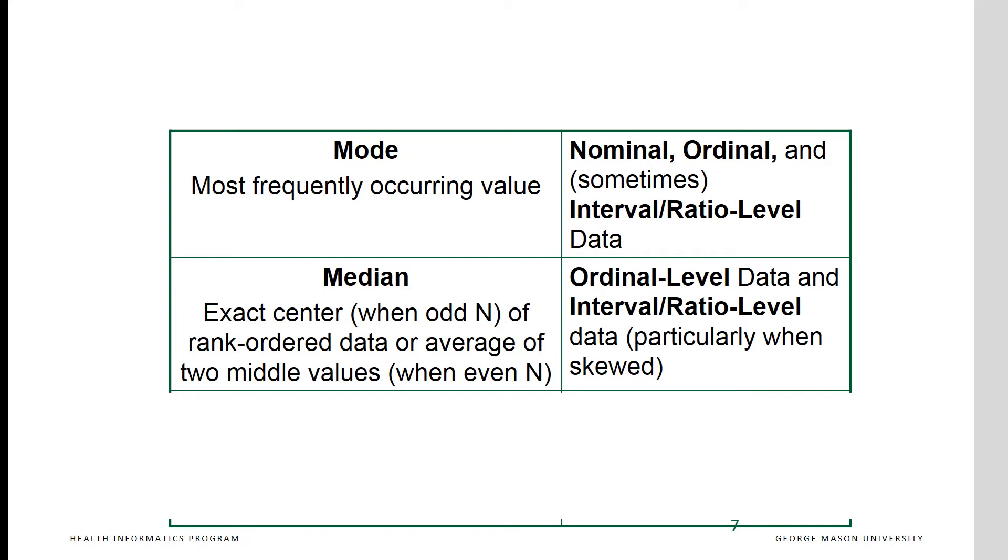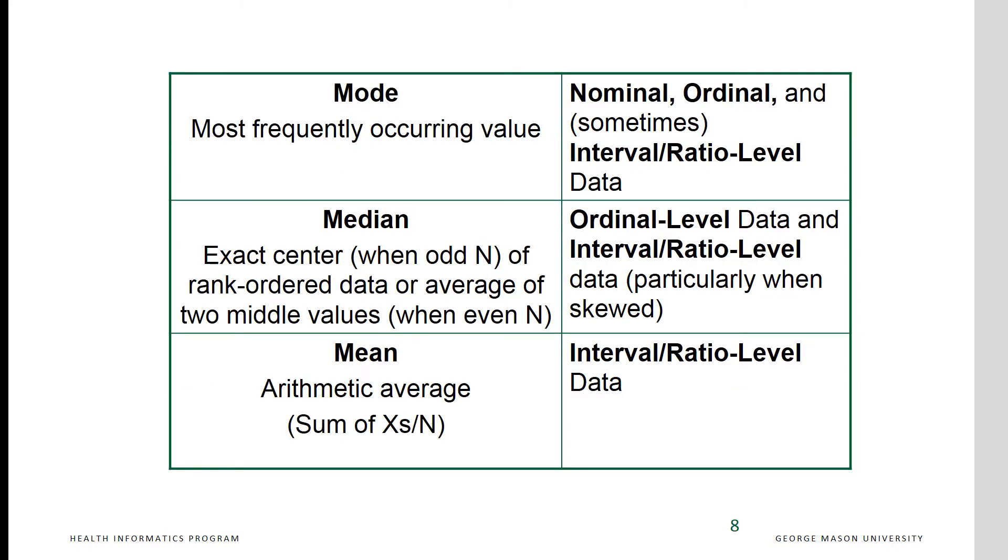With ordinal level data, the most common measure of central tendency is the median, or the value of the middle case in rank ordered data. Put another way, the median is the value of the 50th percentile. Note that with highly skewed interval level data, the median might be more useful than the mean. With interval level data, the mean is commonly used. This is the arithmetic average arrived at by adding up all the values and dividing by the number of cases.